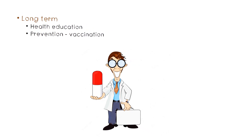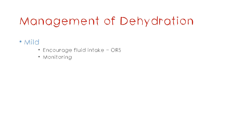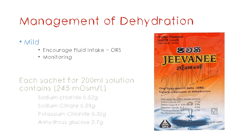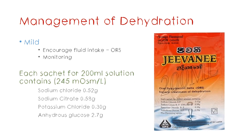How would you manage dehydration in the mild type? As mentioned in the previous video, there is nothing overly serious, so you encourage fluid intake with oral rehydration salts or solution. Oral rehydration salts are special mixtures with specific contents — a balance of electrolytes that is physiological — so it is better than water. We have packets like these with specific constituents that are dissolved in a specific amount of water.